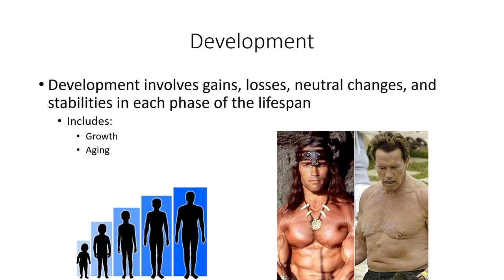To expand further, you can look at development as both growth and aging. As we age, we get bigger; then as we get even older, we actually shrink a little. Those are both gains and losses. In middle adulthood we have neutral changes and stabilities — all part of development. You've also got physical growth: when Arnold was younger he was very muscular, and even when older he's still pretty muscular, but he has lost a lot of his muscle. That is a developmental change.